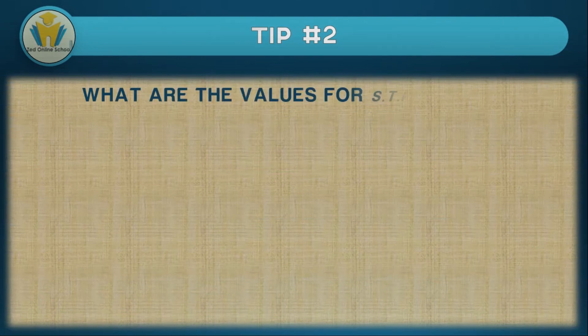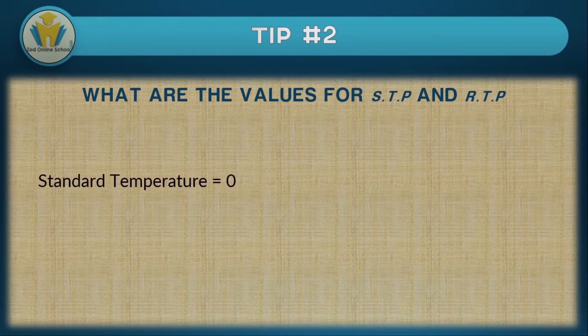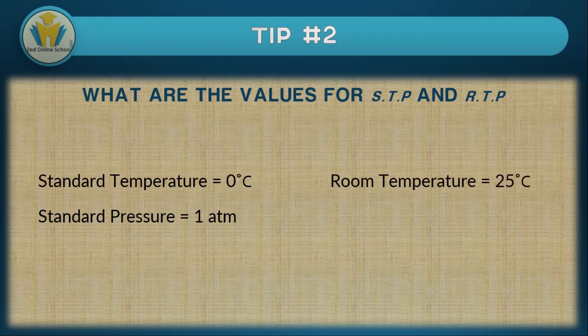The second tip is about what the values for standard temperature and pressure and room temperature and pressure are. Standard temperature is equal to 0 degrees Celsius, while standard pressure is equal to 1 atmosphere. Room temperature is equal to 25 degrees Celsius, and room pressure is just the same as standard pressure. That temperature change is very important for gases, because gases are easily affected by temperatures.